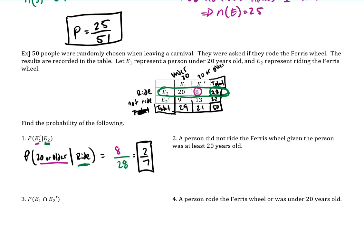As soon as you see 'given,' that's how we want to break it down. So let's look at the next one. It says a person did not ride the Ferris wheel, given the person was at least 20 years old. So 'at least 20 years old' is the 20 or older category.